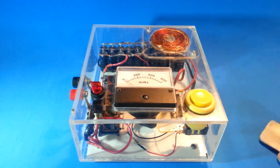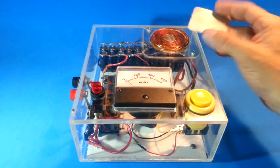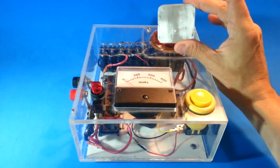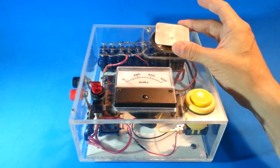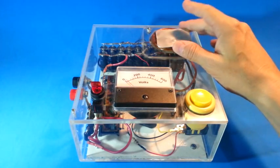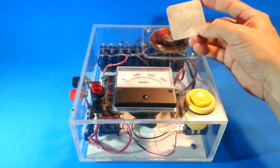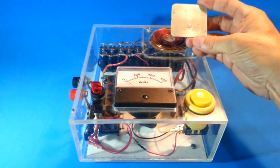This magnetic field only lasts for a fraction of a second, but in this time it induces a current in the aluminum since it is a conductor. The current induced in the aluminum plate generates its own magnetic field.